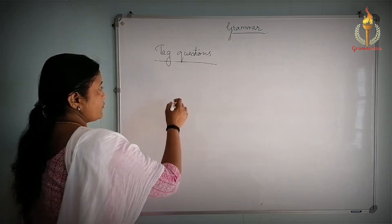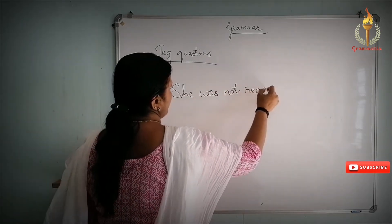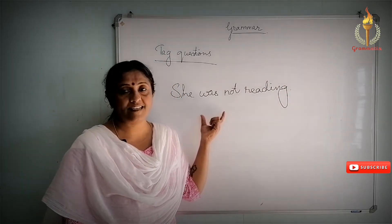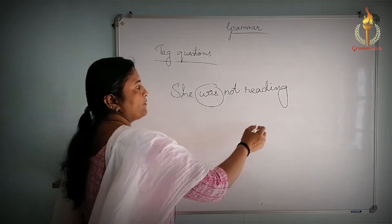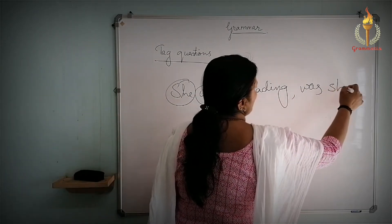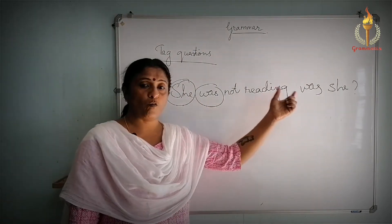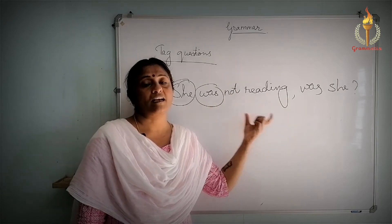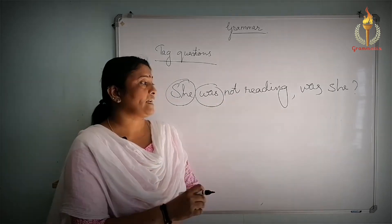If we take a negative sentence, for example 'She was not reading,' this is a negative sentence, so the tag will be positive. You use 'was' as the helping verb and 'she' as the subject pronoun. So the tag is: 'She was not reading, was she?' Every affirmative sentence has a negative tag and every negative sentence has a positive tag. That is how the tag works.